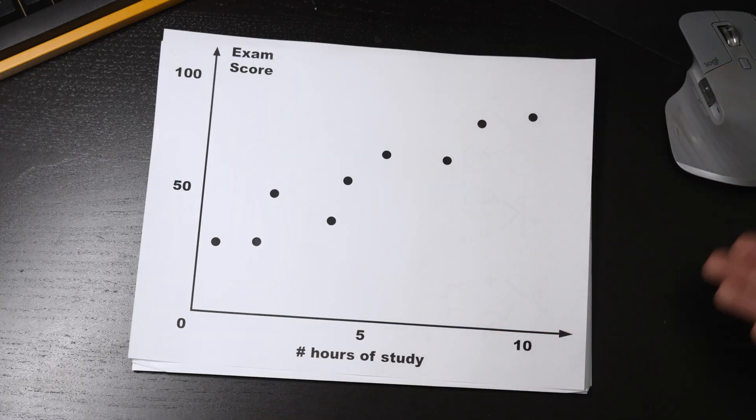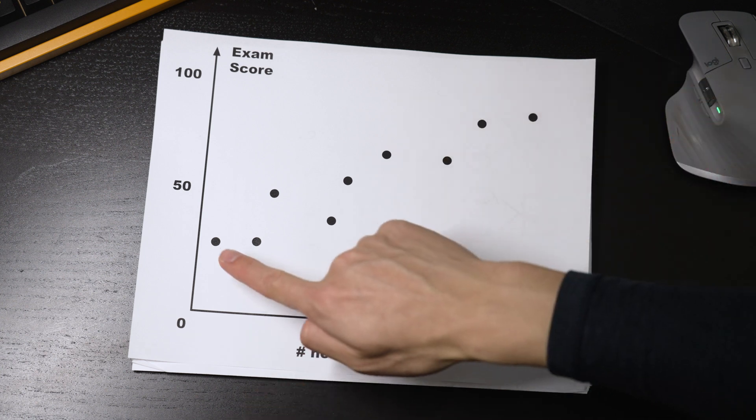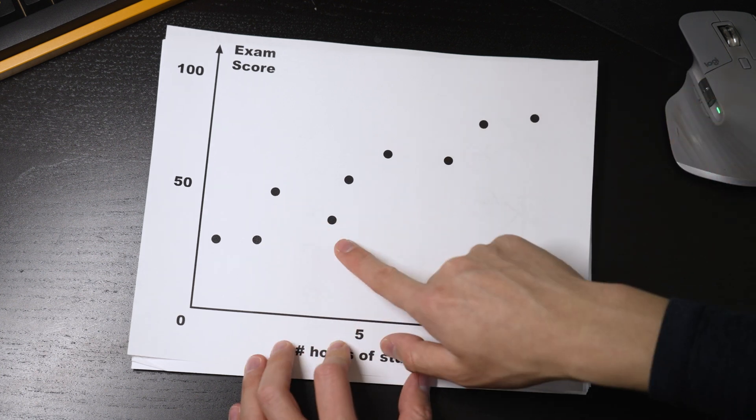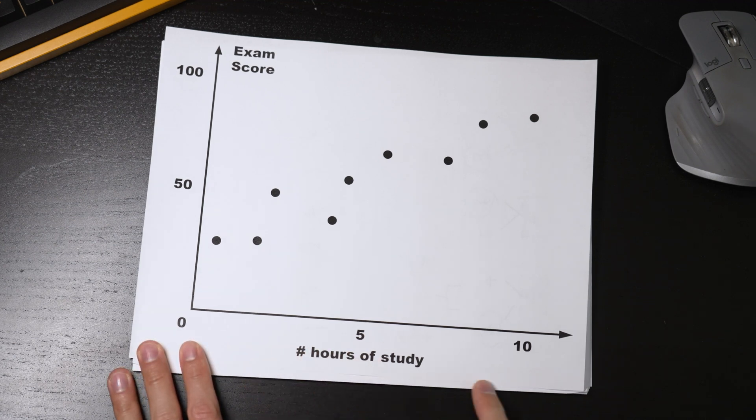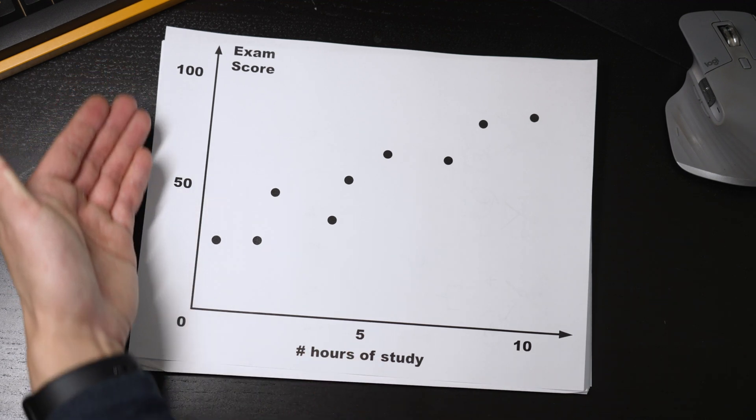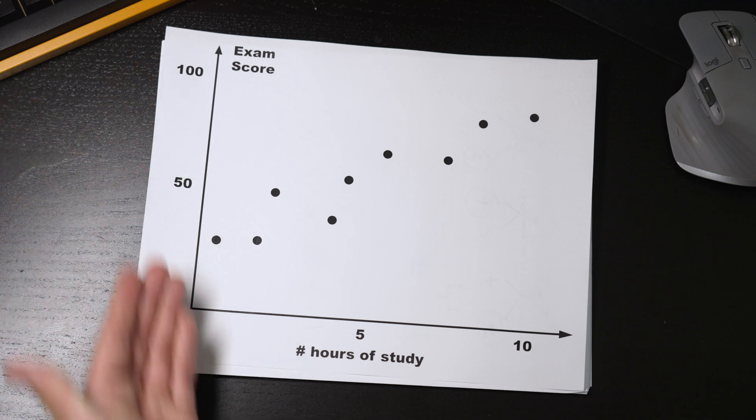Let's say I have some data I collected from my experiment. Each point represents a student. The x-axis represents the number of hours studied, and the y-axis is the score they got on their exam from 0 to 100.